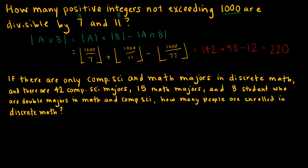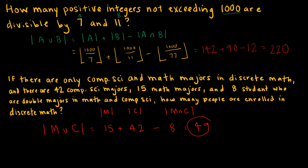Second example, same idea. I'm looking at computer science and math majors. If I want the total number of people in discrete math, I take the number of math majors, 15, plus the number of computer science majors, 42, and subtract anyone in both categories — both math and computer science — which is 8. So 15 plus 42 minus 8 gives 49 as my solution.